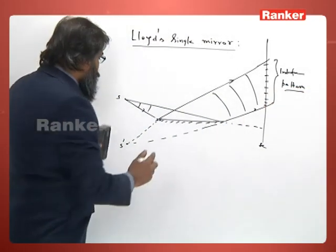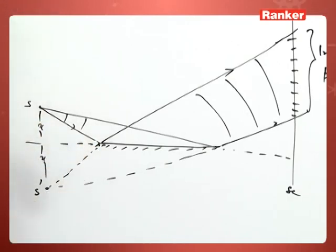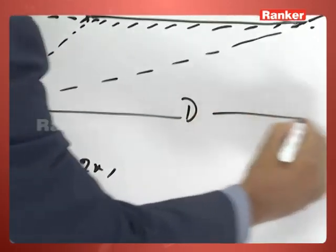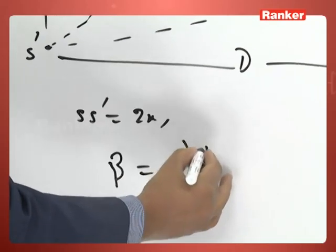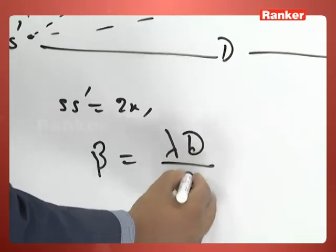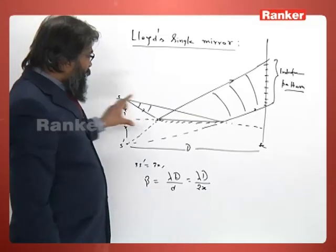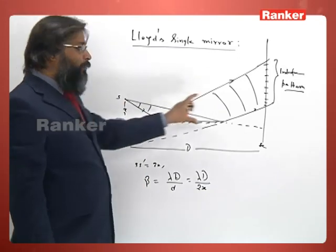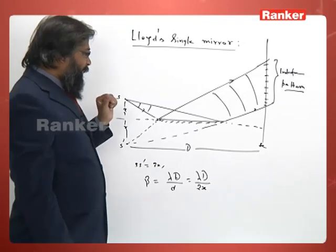Now suppose this distance is assumed to be x. This distance will also be x, so S to S dash becomes 2x. The distance between them is d. So fringe width β becomes λd/d, that is λd/2x. This is similar to the fringe width formed in YDC experiment, but there is a difference.